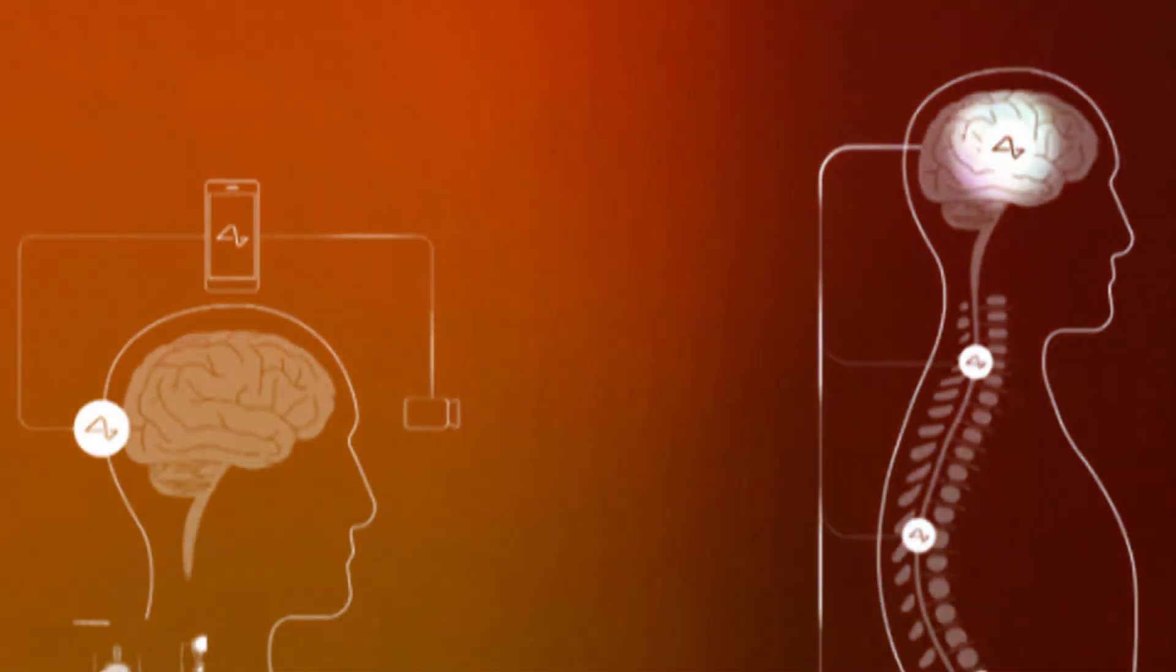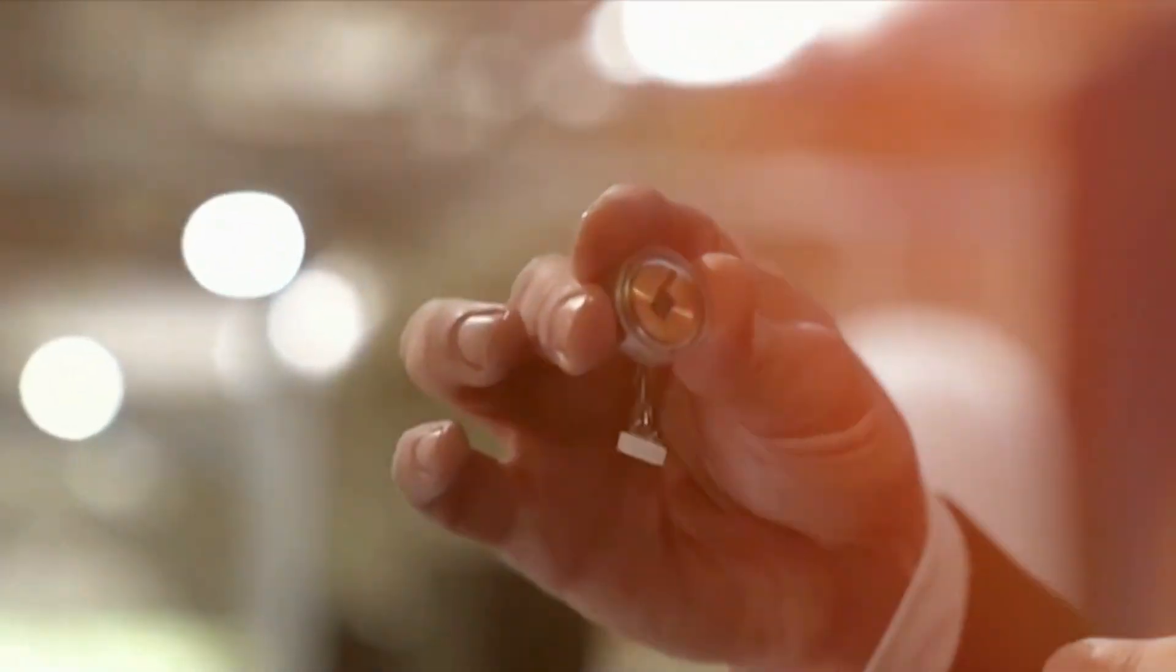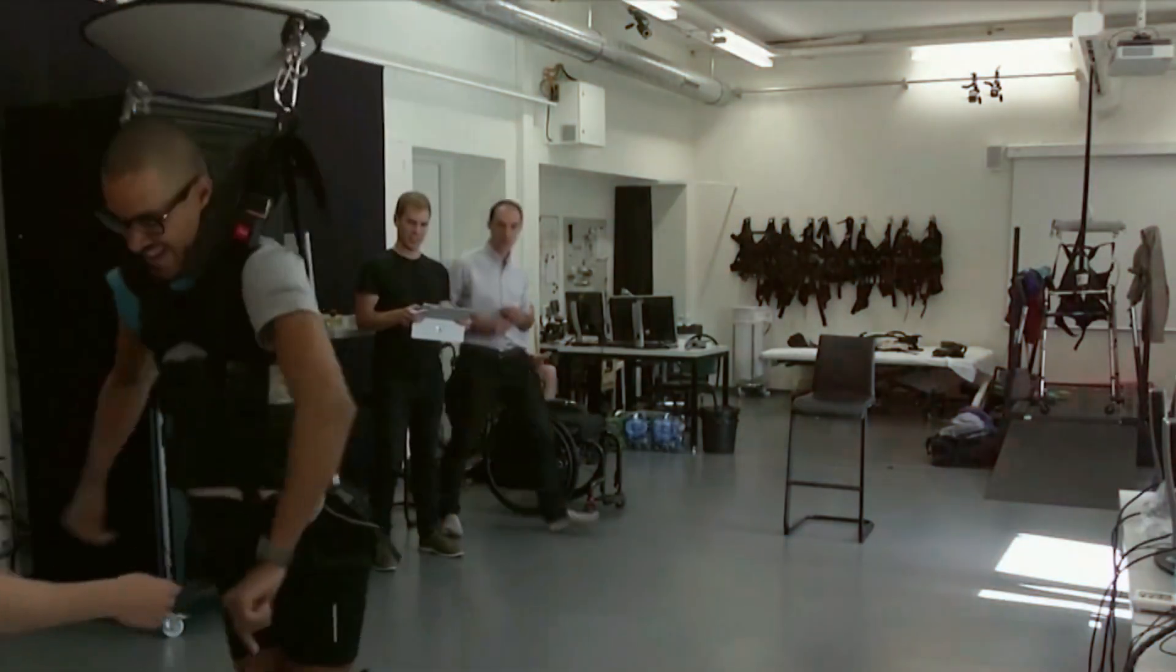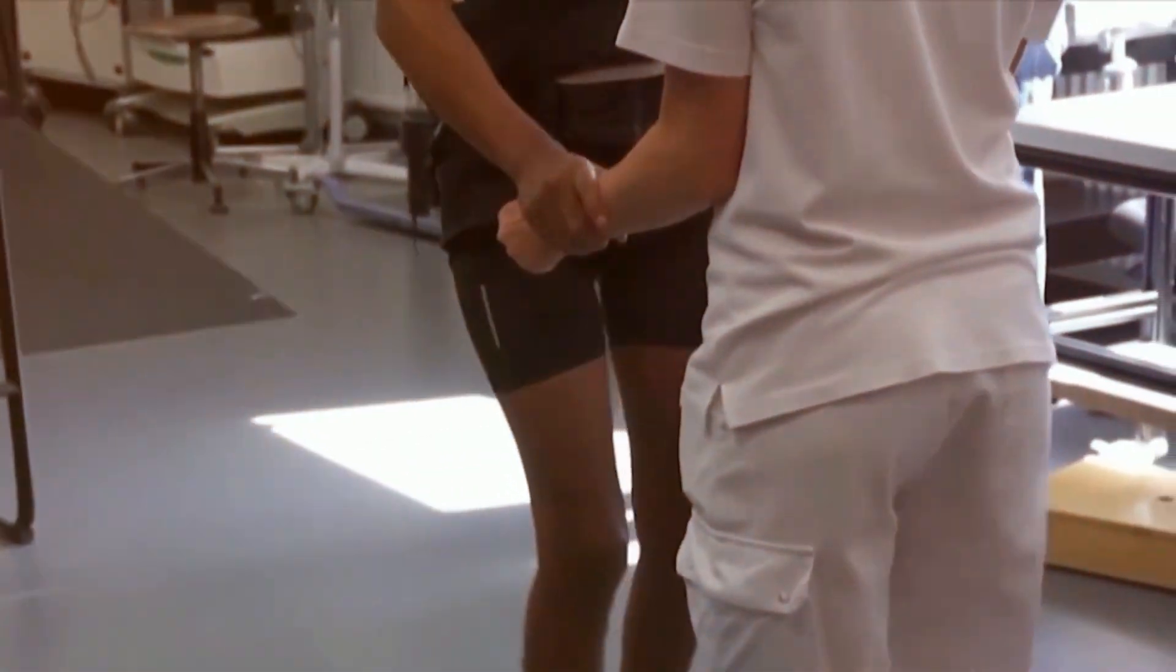Neuralink's technology is centered around a remarkable device called telepathy, a tiny chip that is implanted in the skull with ultra-thin wires connected to the brain. The chip can record and decode the electric signals generated by neurons, the cells that process and transmit information in the brain. Additionally, it can stimulate neurons, creating artificial signals that can influence brain activity.